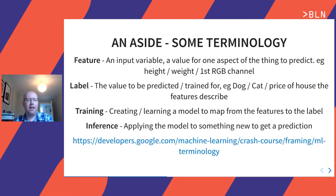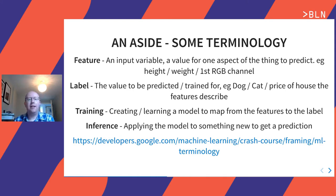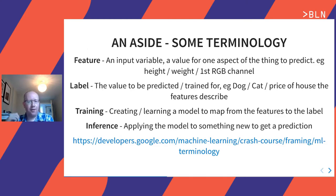Generally speaking, a feature is something that you feed into the model. The label is something that your experts — your humans — have given you, the thing that's going to be predicted. Training is the process of feeding in those features and the labels and teaching the ML system. And inference is then when you give it something new and say: hey, what is this? What should this be?